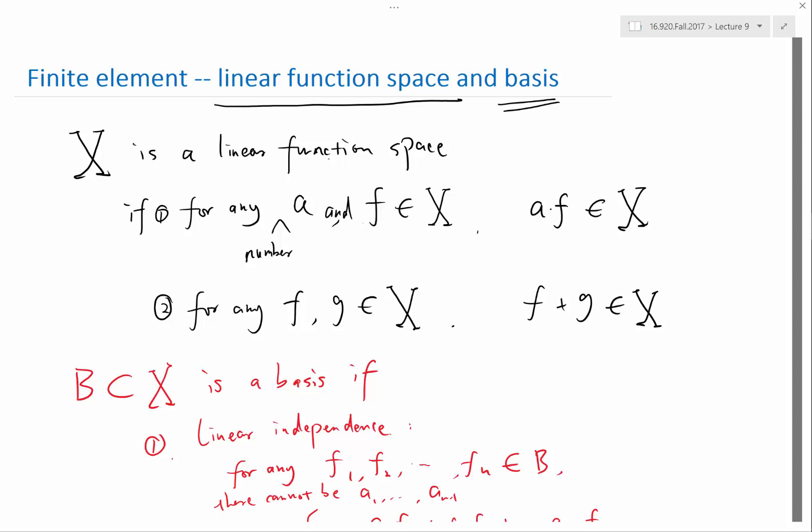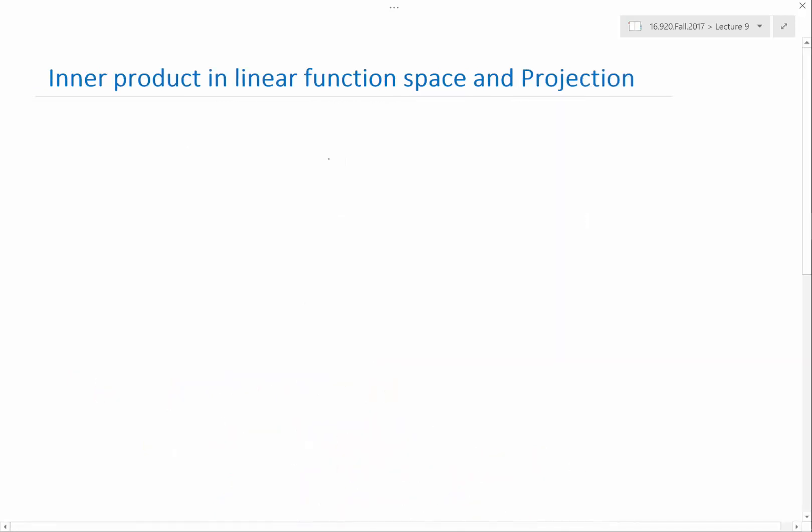So now we have defined what is that linear function space. The next question is, what does it mean by being as close to a function as possible? In order to define that notion of as close as possible, we need another mathematical concept called the inner product.